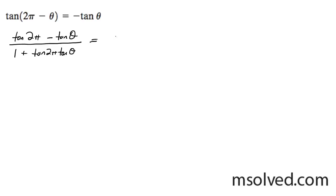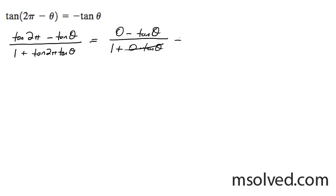So what you get on top is 0 minus tangent theta, all over 1 plus tangent of 2π times 0 times tangent theta. This cancels out, and you get negative tangent theta over 1, which is equal to negative tangent theta. And that's it.